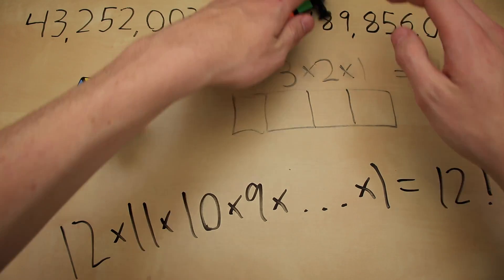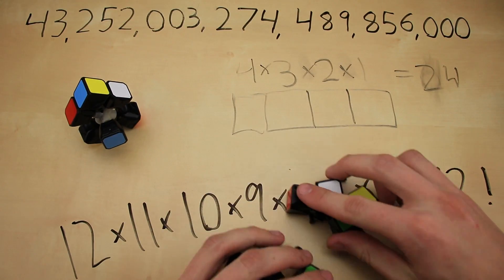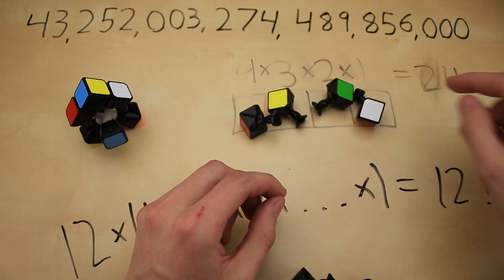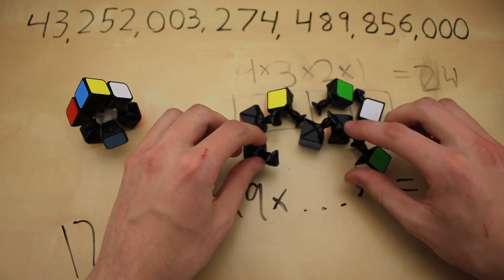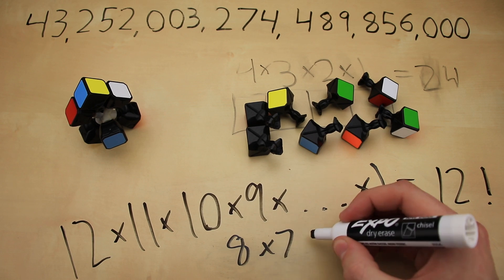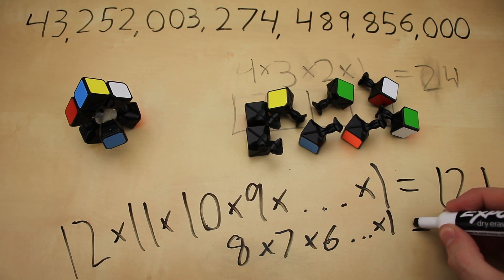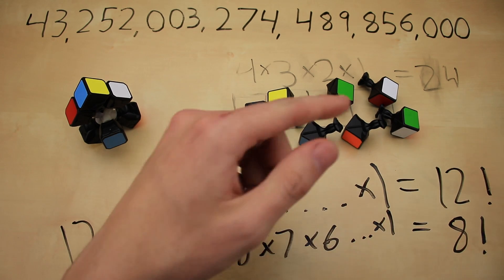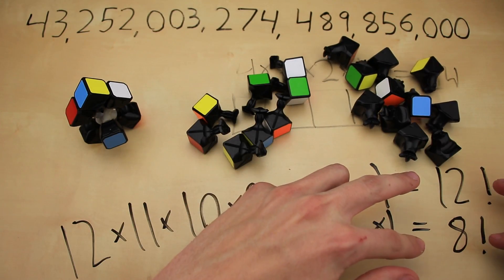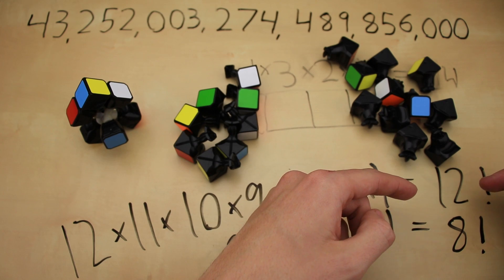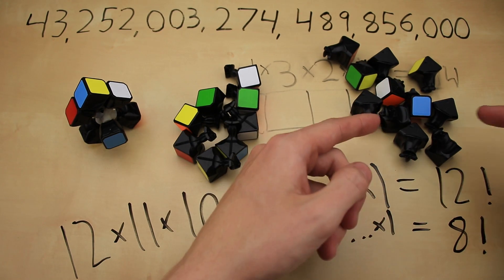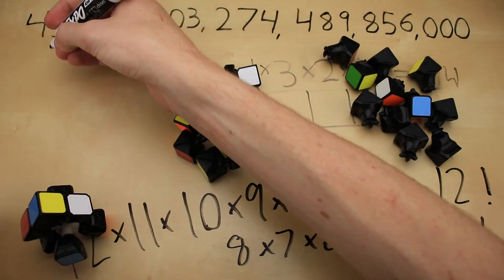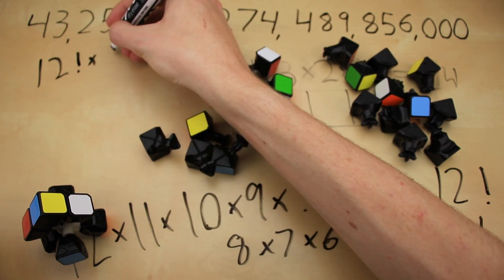We can do this exact same type of calculation with the corners. If we do the same example with 4 corners, we have 4 possible corners that can go into the first slot, 3 into the second, 2 into this one, and 1 into this one — giving us 24 combinations. Expanding that out to all 8 corners gives us 8 × 7 × 6 all the way down to 1, which can be written as 8 factorial. To figure out the total number of arrangements of edges and corners combined, we multiply these two numbers together — 12 factorial times 8 factorial — because for each arrangement of edges, there are 8 factorial arrangements of corners.